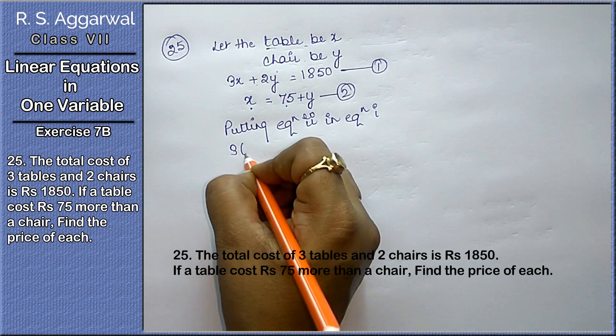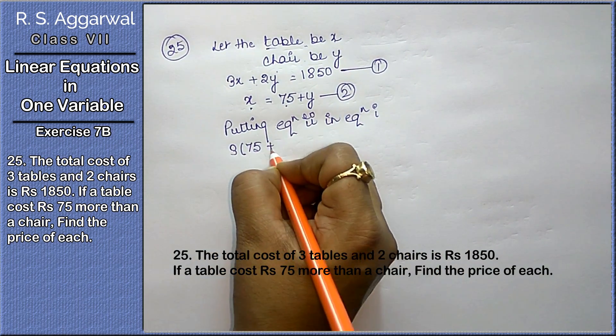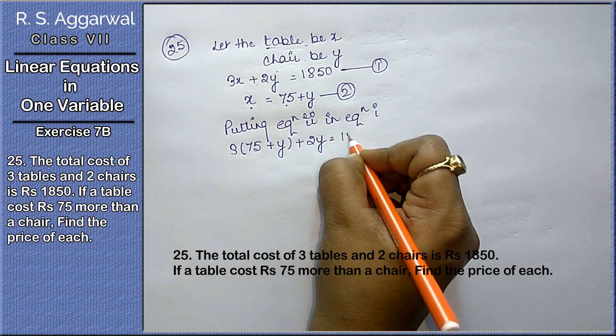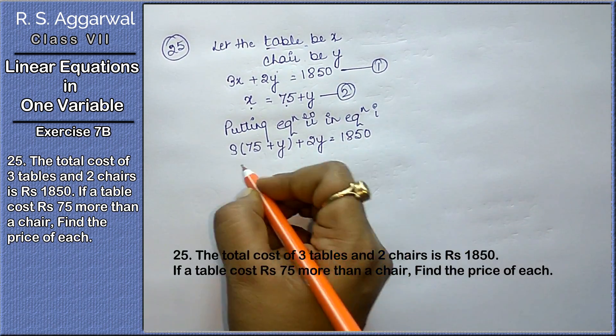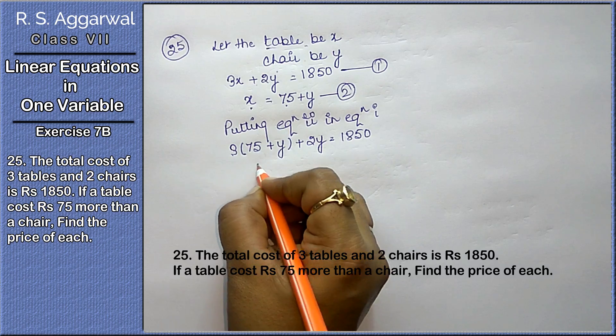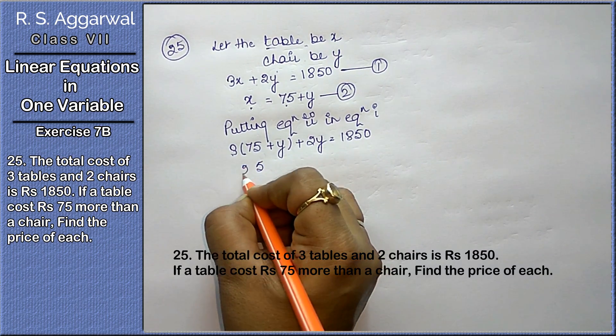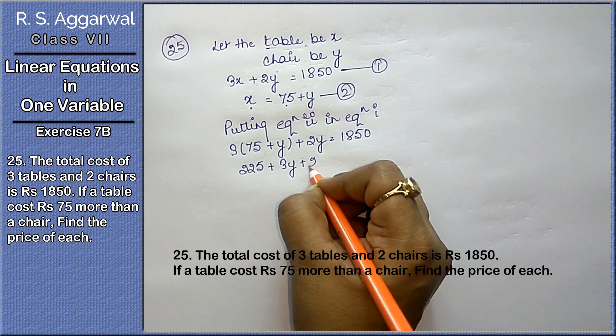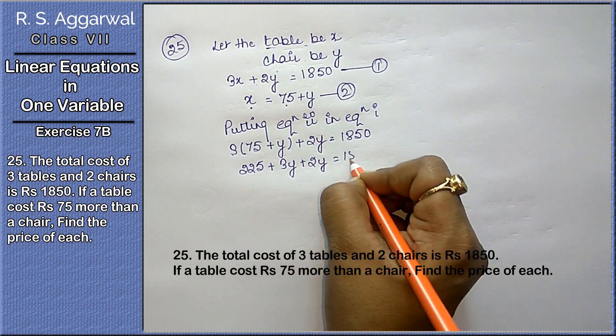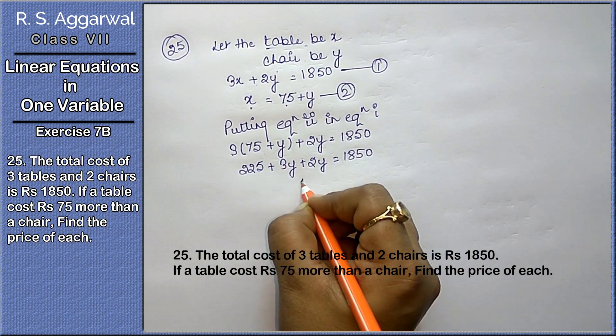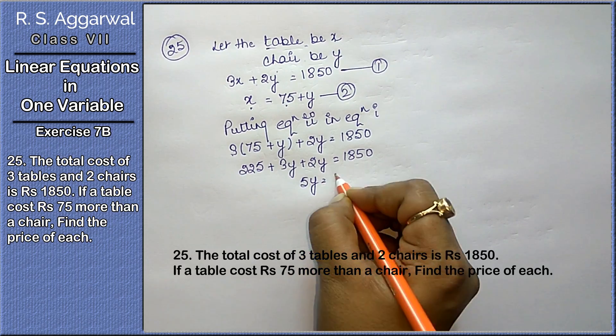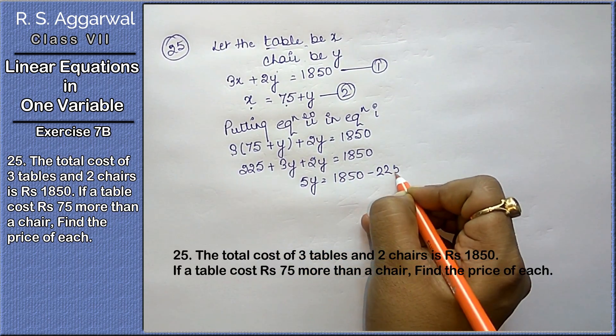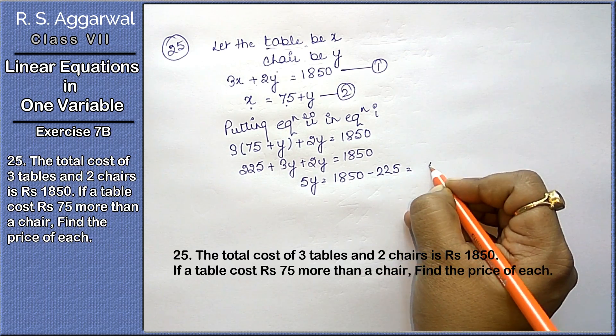Now 3 into (75 plus y) plus 2y equals to 1850. Three 5s are 15, three 7s are 21. That's 225 plus 3y plus 2y equals to 1850. This gives us 5y equals to 1850 minus 225.